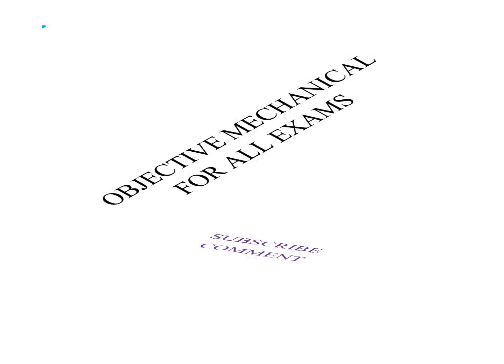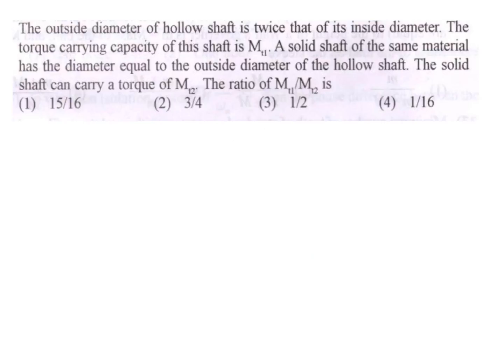Hello friends, welcome to my channel. The question is: the outside diameter of a hollow shaft is twice that of its inside diameter. The torque carrying capacity of this shaft is MT1. A solid shaft of the same material has a diameter equal to the outside diameter of the hollow shaft and can carry a torque of MT2. Find the ratio MT2 by MT1.